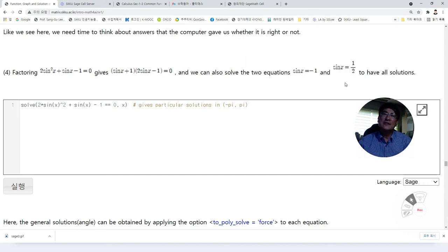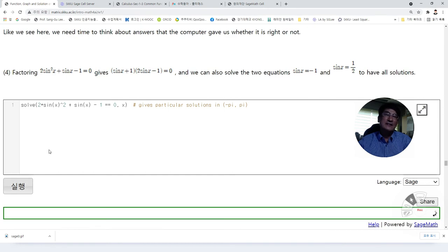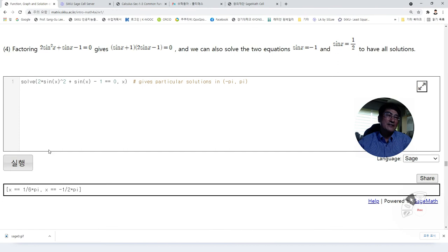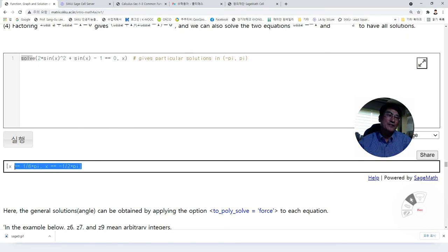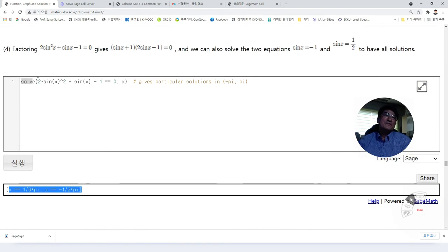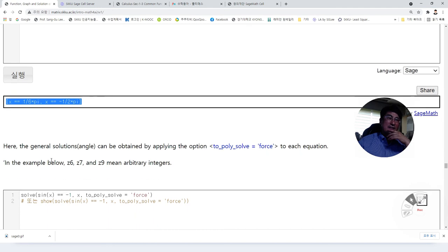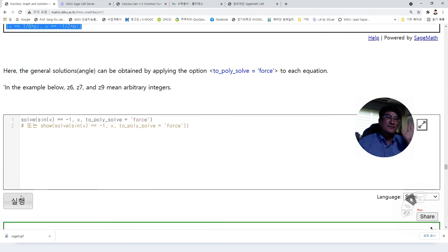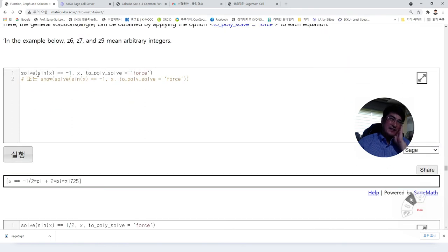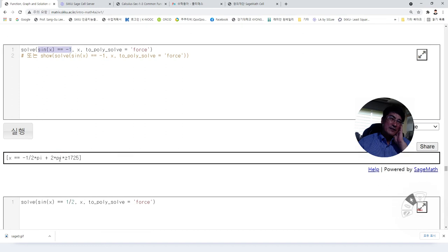So we solve these two solutions easily. Then we can have all the solutions for the given equation with the simple command solve like this. We have two solutions like this. If you solve this, we can have this. But if you solve this, we will see the difference. See, if you draw the graph, then this solution gives us what? This is a periodic equation. So we have infinitely many solutions like this.